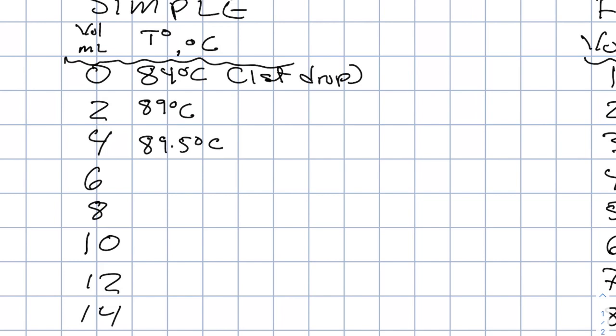Every two milliliters, we will record the temperature. You can see the temperature rises rather quickly and then forms a steady rise. About half a degree seems like each two mLs, roughly speaking.